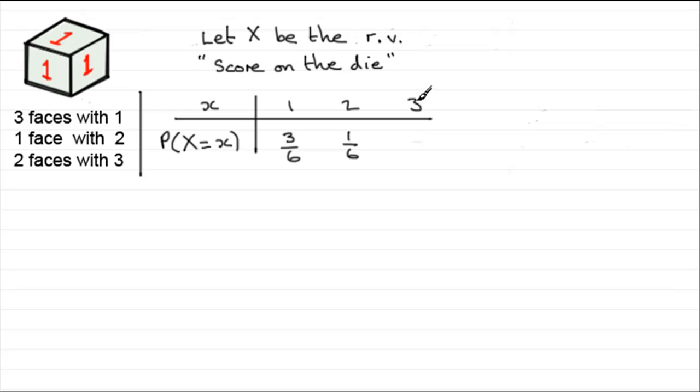What's the probability of scoring 2? Well, to score a 2, we've got one face with a 2 on it, so that's got to be 1 out of 6. And similarly, to score a 3, we've got two faces with a 3 on it, so that's got to be 2 out of 6.